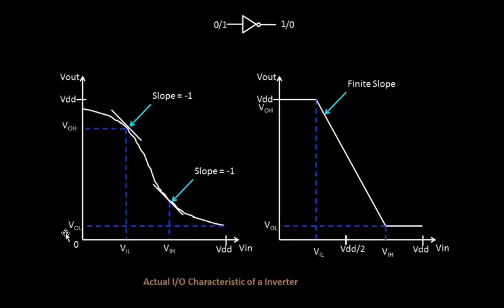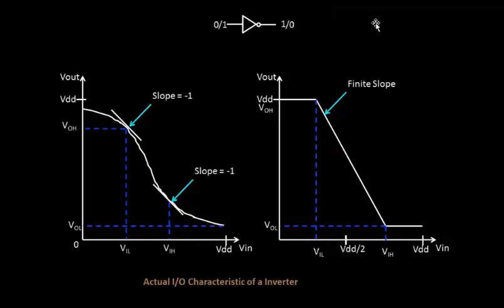Summarizing the inferences: VOL must be less than VIL so that the next stage of the inverter can recognize logic 0 at its input — the input must be less than VIL to be detected as logic 0. VOH must be greater than VIH so that any logic connected to this output detects a logic 1 at its input.